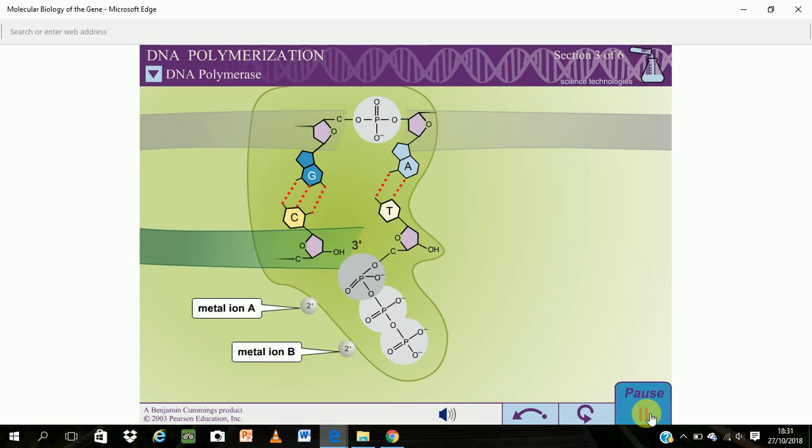The palm domain also binds two divalent metal ions. These metal ions are crucial for DNA polymerization activity.